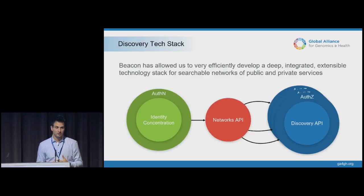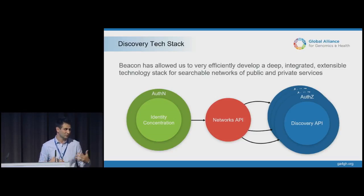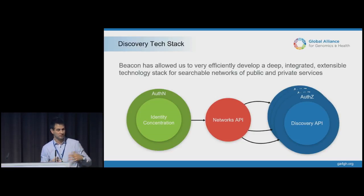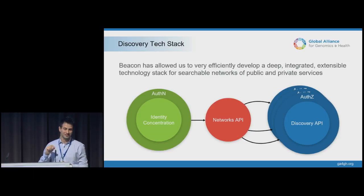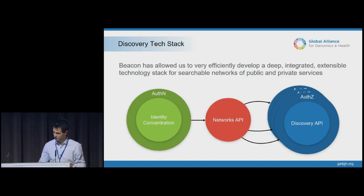The strategy we're taking, not only with Beacon but also across Discovery, is to develop a more modular framework that will allow us to mix and match these tools. We imagine that not only does Beacon require a network of services, but so does Matchmaker Exchange, and so do emerging search APIs. Beacon has, by virtue of being simple, allowed us to go a very long way to develop this ecosystem technology stack, where we can now replace and slot in more sophisticated search protocols.